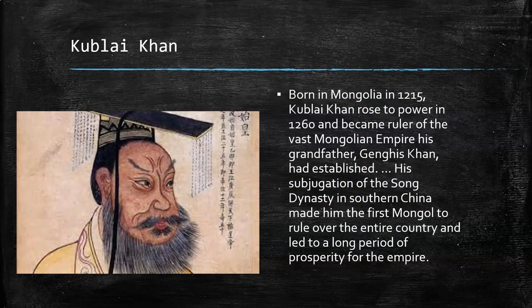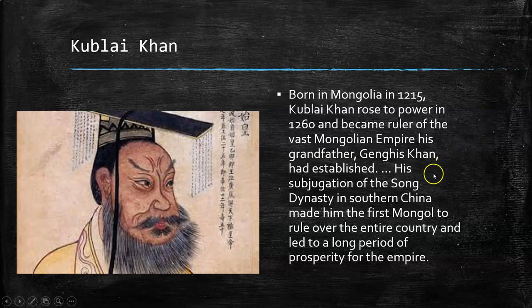Kublai Khan — there was probably no greater leader than Genghis Khan to the Mongols, and Genghis may have been one of the most effective world leaders in all of history. But Kublai Khan, his grandson, was very effective as well. He subjugated the Song Dynasty in southern China, making him the first Mongol to rule over an entire country, and it led to a long period of prosperity.